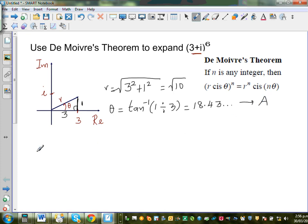So I can now write 3 plus i to the power 6. This is in a plus bi form. And I'm writing the same thing in polar form. Is root 10, cis, your theta is A, to the power 6.